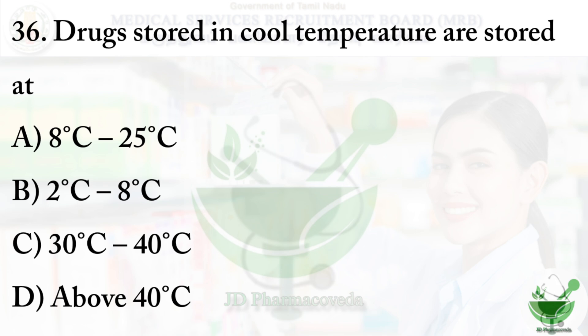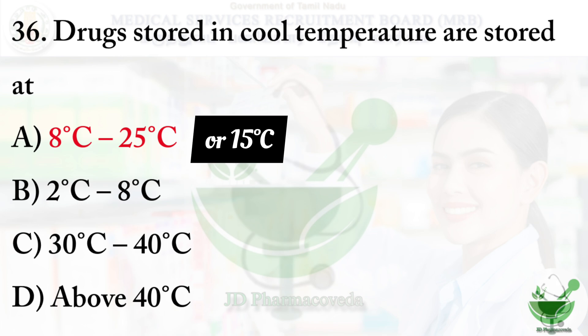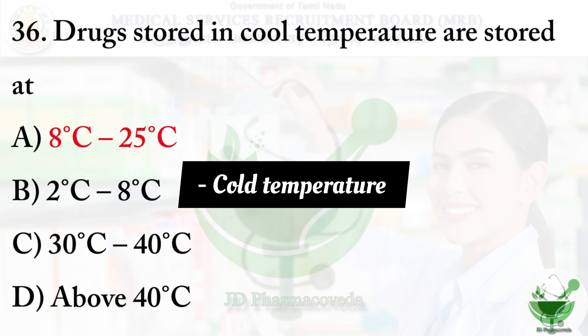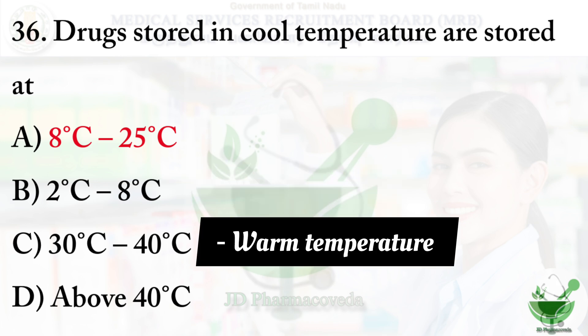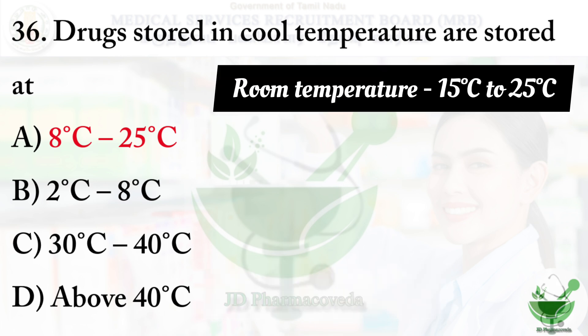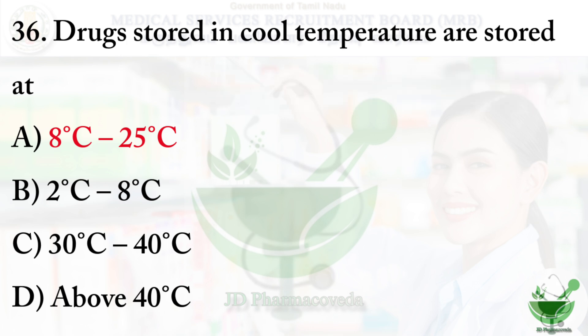Question number 36: Drugs stored in cool temperature are stored at — option A 8 to 25 degrees Celsius, option B 2 to 8 degrees Celsius, option C 30 to 40 degrees Celsius, and option D above 40 degrees Celsius. The correct option is option A, 8 to 25 degrees Celsius. Note: if the option shown is 8 to 15 degrees Celsius, you can choose that option too. For reference: 2 to 8°C means cold temperature, 30 to 40°C means warm temperature, above 40°C is hot temperature, and room temperature is 15 to 25 degrees Celsius.